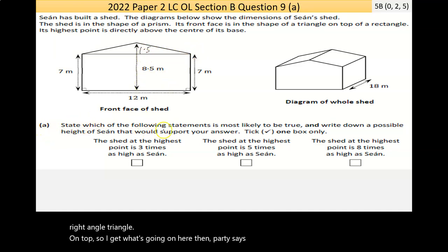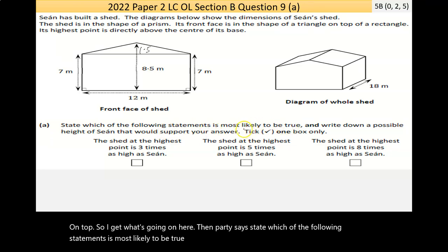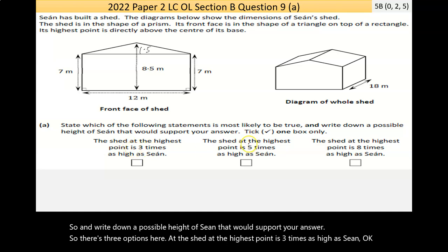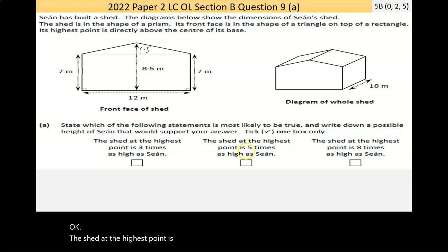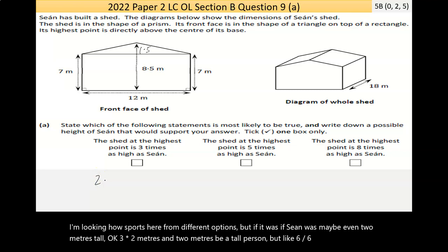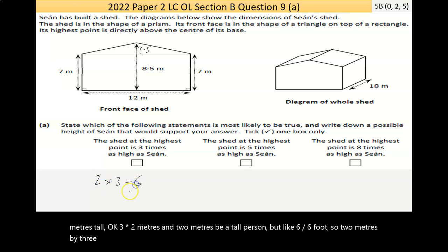Part A says state which of the following statements is most likely to be true, and write down a possible height of Sean that would support your answer. There are three options: the shed at the highest point is three times as high as Sean, five times as high, or eight times as high. If Sean was like two meters tall, which would be over six foot, three times two would be six. So he'd have to be more than two meters tall, which would be unusual.